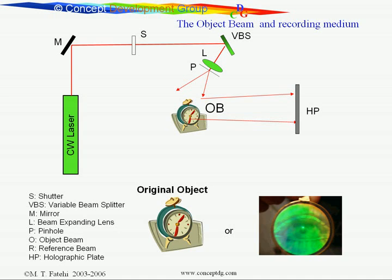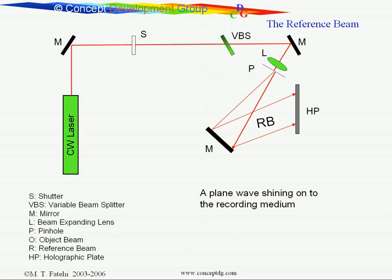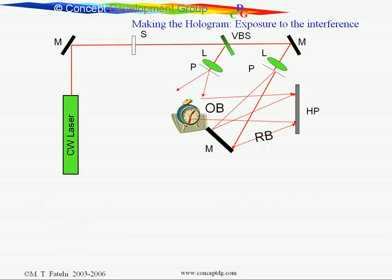Without the reference beam, this is what we have in the object beam. After we process the hologram and place it back where it was, we simply shine the holographic plate with a similar beam as the reference beam. This time, we could, for all practical purposes, remove the object. For viewing the hologram, there is no object—we are simply shining there. What do you think is going to happen?